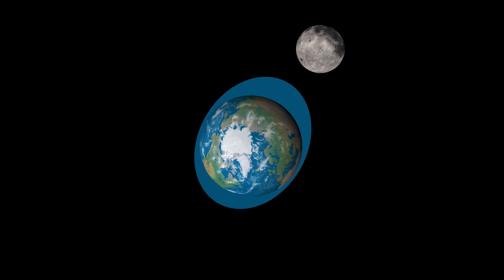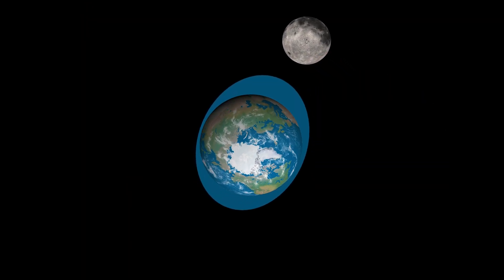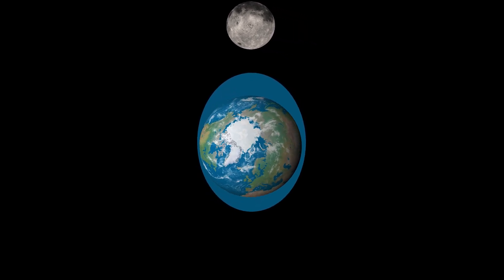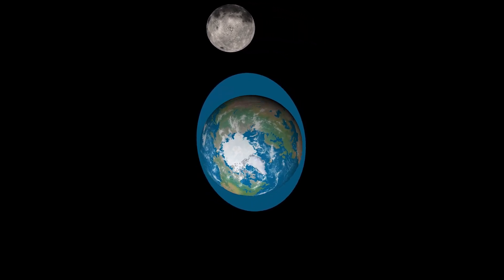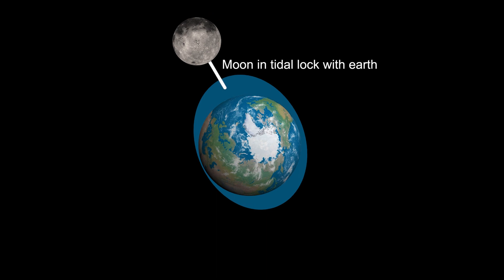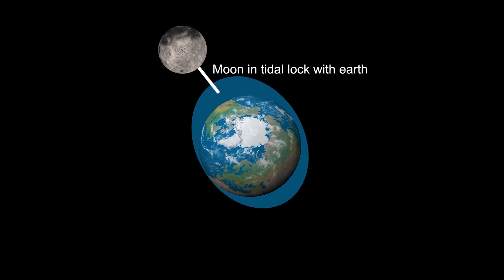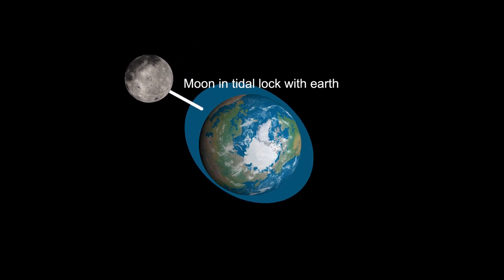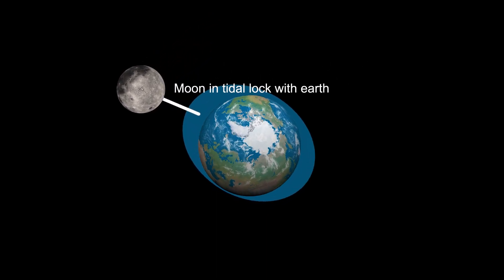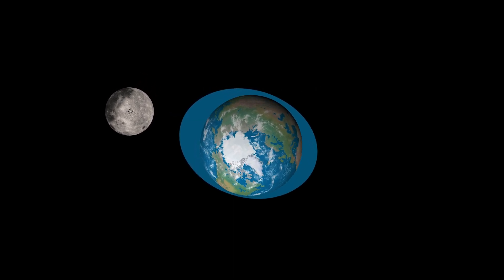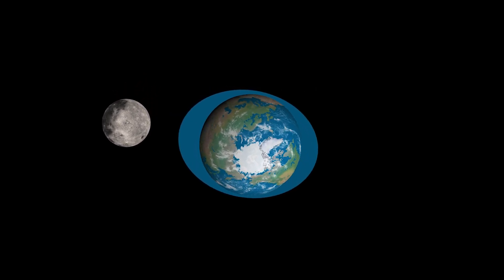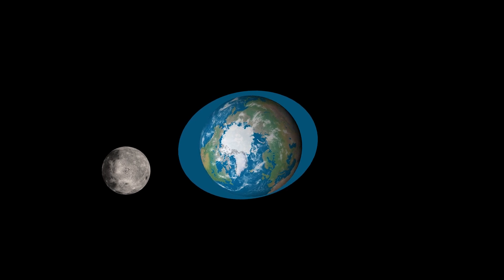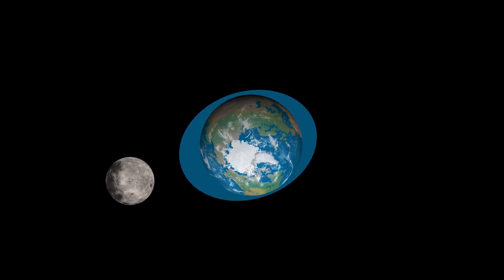If we look at the Moon and the Earth from far above the North Pole, the Moon causes a bulging of the oceans. The Moon is in tidal lock with the Earth, which means we always see the same side of the Moon. As the Moon goes around the Earth, which takes about 30 days, it also drags this bulge of oceans.